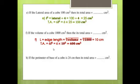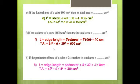Last question in the completion section: The perimeter of the base of a cube is 24 cm. Find its total area. L = perimeter ÷ 4 = 24 ÷ 4 = 6 cm. Total area = 6L² = 6 × 6² = 216 cm².